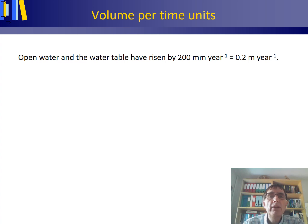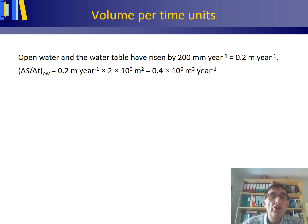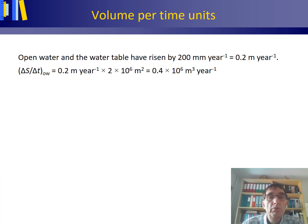We also know that the open water and the water table have risen by 200 mm during the year. We need to establish the change in storage for our water balance equation, and this is in two parts. We have a change in storage for the open water part and for the land part. The change in storage for the open water part is 200 mm per year, or 0.2 meter per year. Multiply this by the area of your open water and you obtain an answer in cubic meter per year.